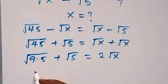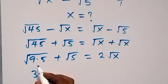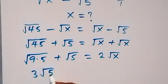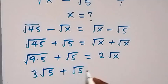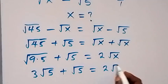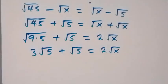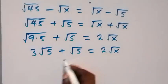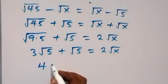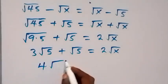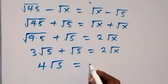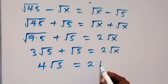Since root 9 is 3, we have 3 root 5 plus root 5. These are like terms, so combining them gives 4 root 5, which equals 2 root x.